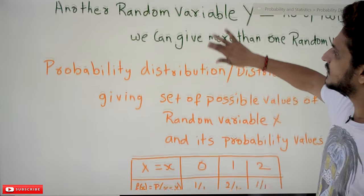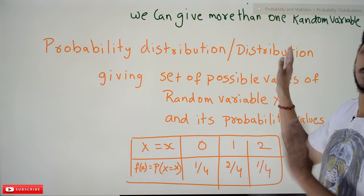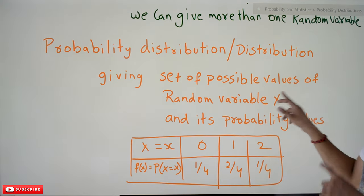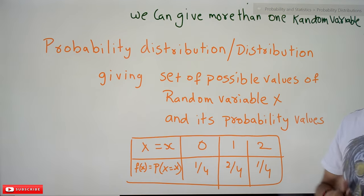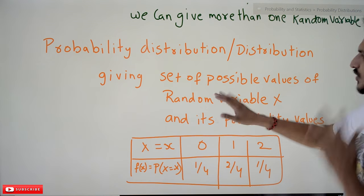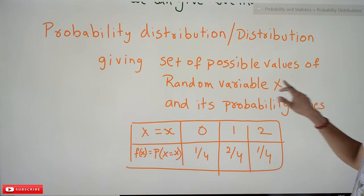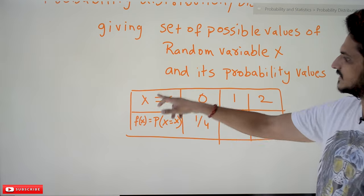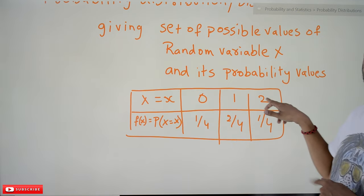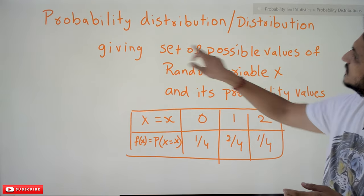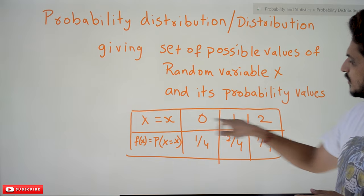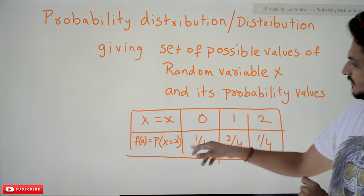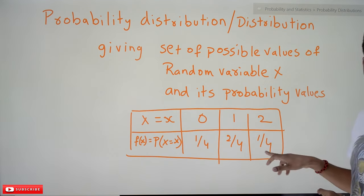Now coming to probability distribution — or simply called distribution. Giving the set of possible values of random variable X and its probability values is called a probability distribution. For our experiment, the possible values of X are 0, 1, and 2. The probability function f(x) = P(X = x) gives: 1/4 for x = 0, 2/4 for x = 1, and 1/4 for x = 2. Presenting values like this is what we call a probability distribution.